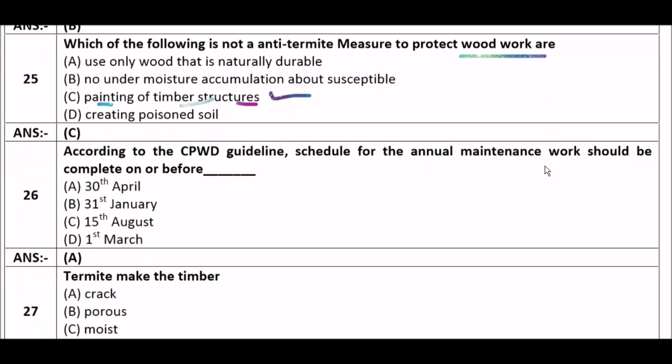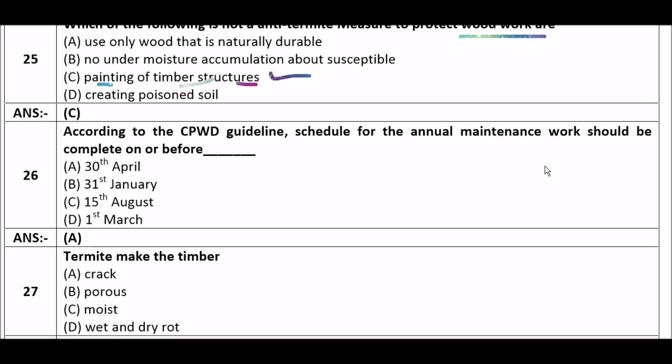Next question: According to CPWD guidelines, the schedule for annual maintenance work should be completed on or before — option A: 30th April, option B: 31st January, option C: 15th August, option D: 1st March. The right answer is option A, 30th April. According to CPWD guidelines, the schedule for annual maintenance work should be completed on or before 30th April.